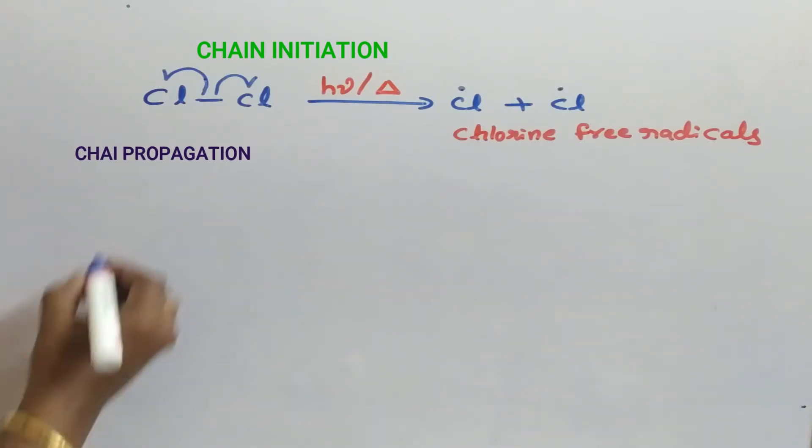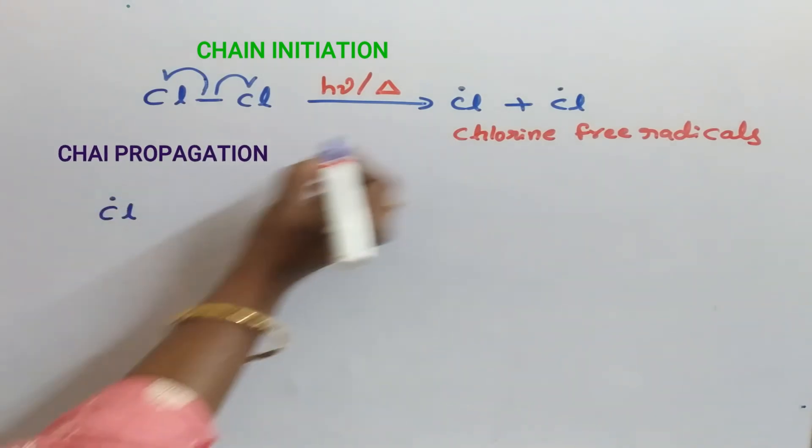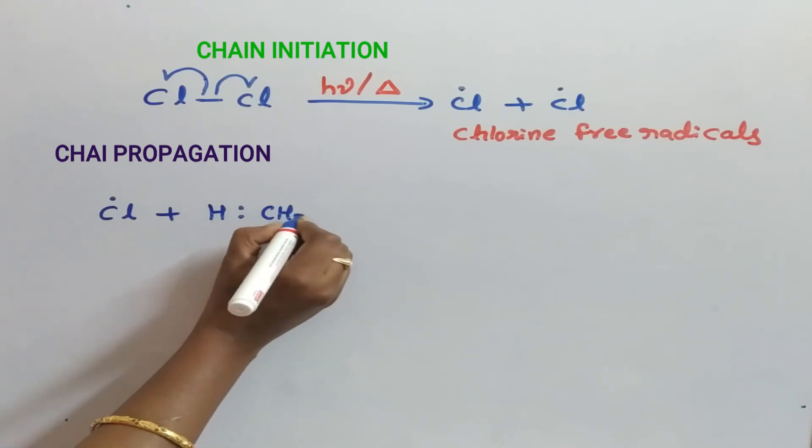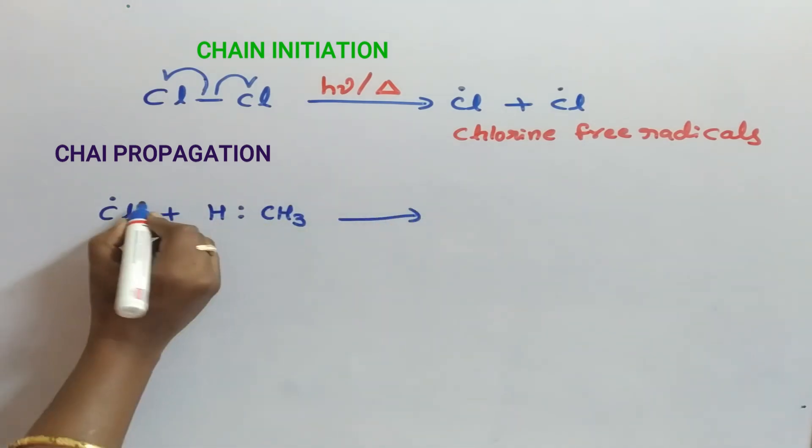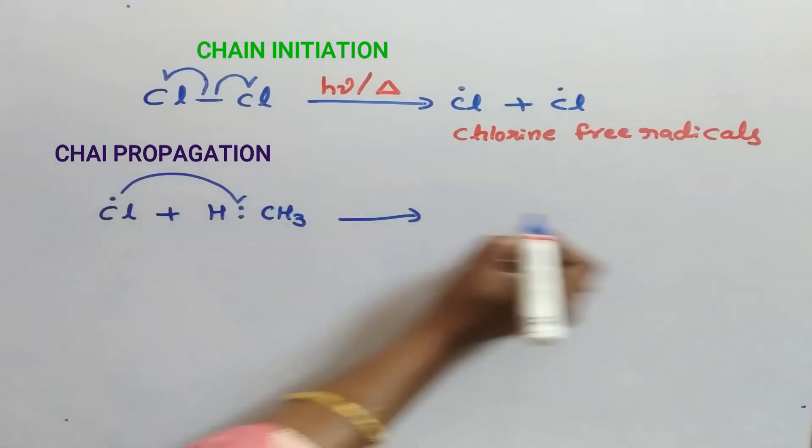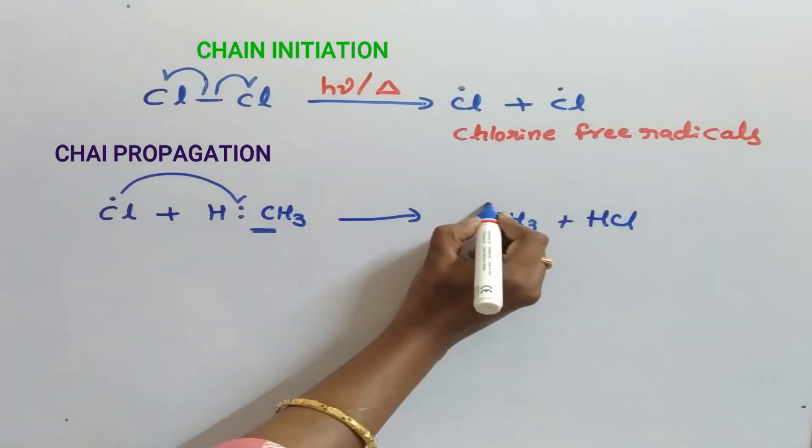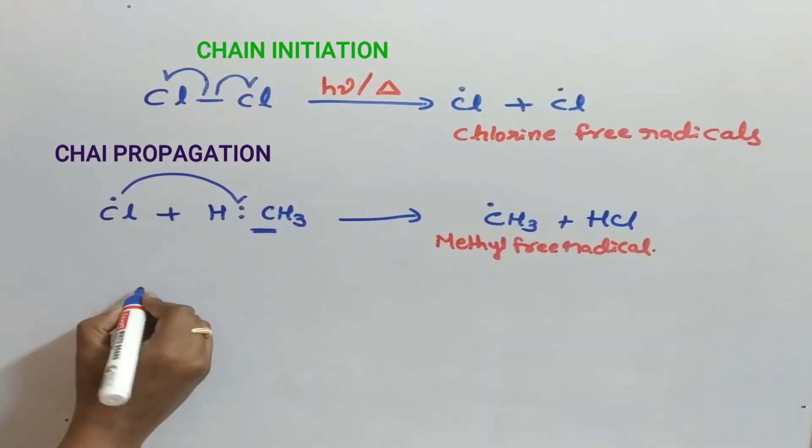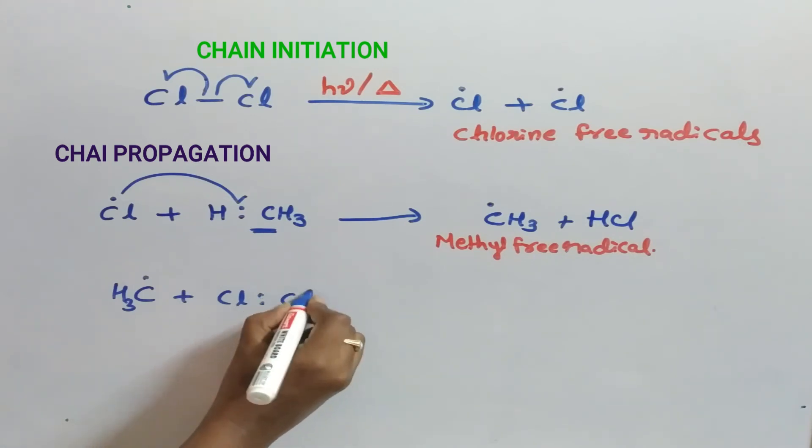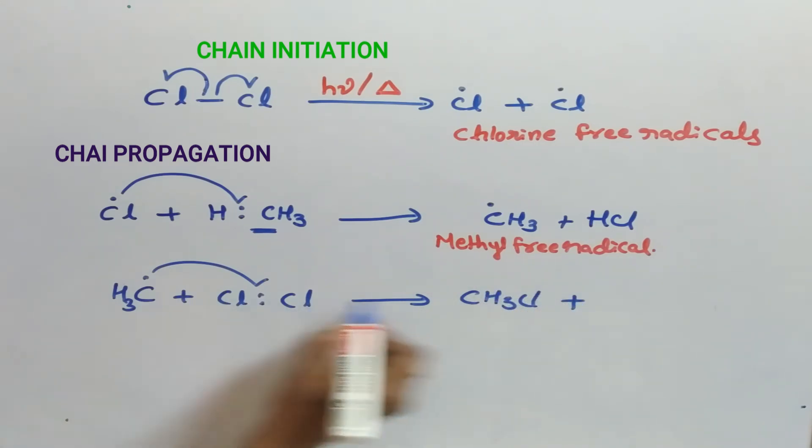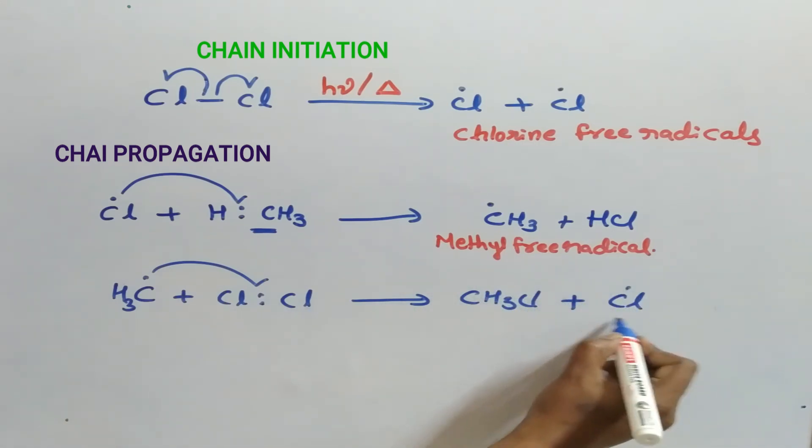Next, chain propagation. Chlorine free radical attacks methane and thereby forms HCl plus methyl free radical. Again this methyl free radical attacks the chlorine molecule and thereby forms chloromethane plus Cl, the chlorine free radical.